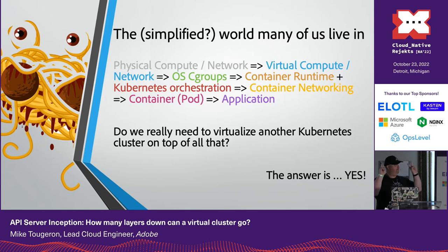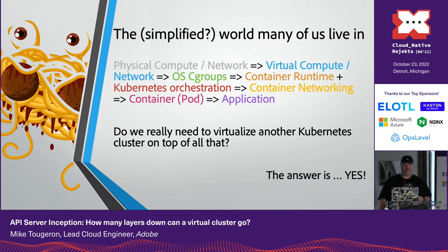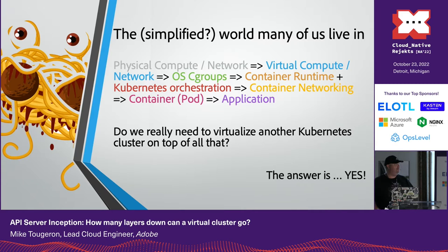The simplified world that many of us live in with Kubernetes: we start off with our physical compute and network, then dive into virtual compute and network, then get into our operating system with cgroups, then container runtimes and Kubernetes orchestration, then container networking, then the container itself inside our pods. And then if you're lucky, you have your application — and if you're Java, you have your JVM too.